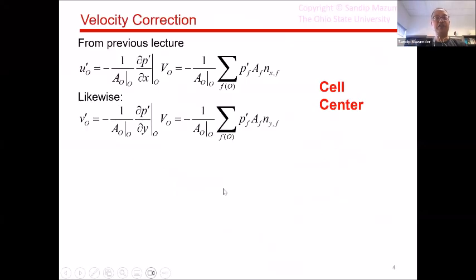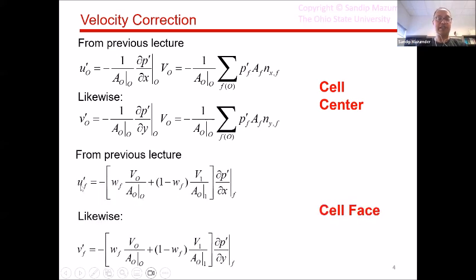This is what we had from the previous lecture. These are our expressions for the cell center velocities. This is where we had applied the divergence theorem to actually come up with this expression. The only difference between calculating pressure sources for the momentum equation and this expression is that here we are using pressure corrections. Likewise, we derived expressions last time for the cell face velocities. However, I mentioned also that we don't really need to calculate the cell face velocities. What we really need to calculate are basically the velocity dotted with the surface normal because we really need to calculate correction of the mass flux because the mass flux is what goes into the links for the momentum equation.